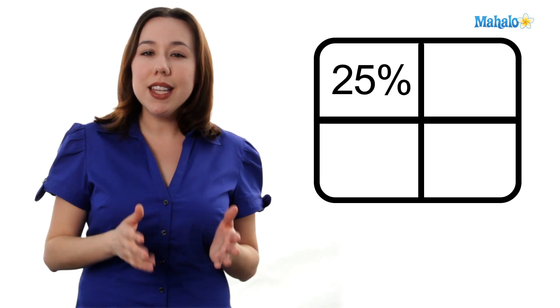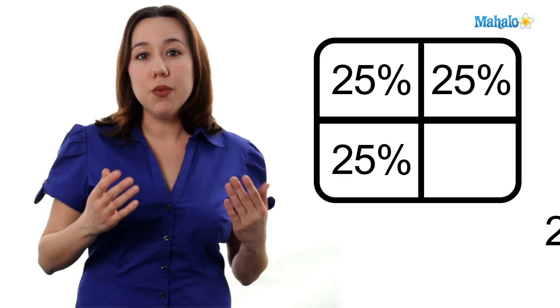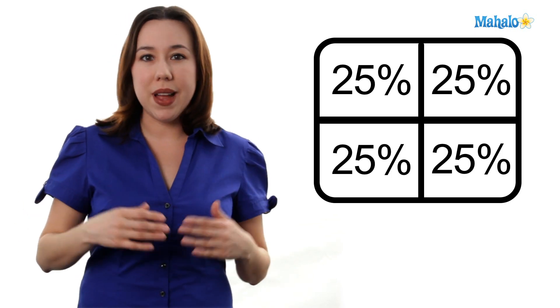Each of those squares is going to be a probability, and each of those squares is one fourth, or 25%.